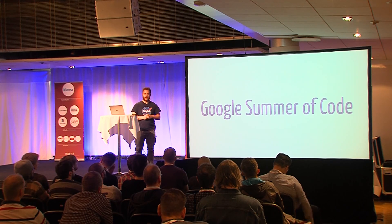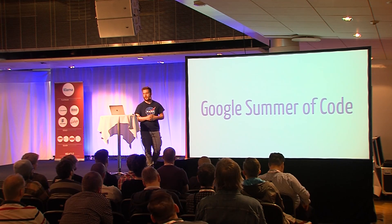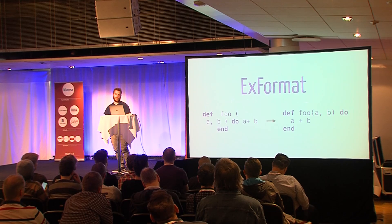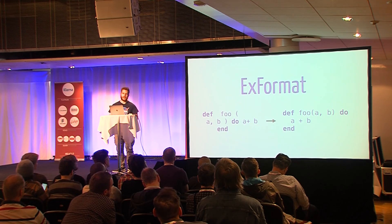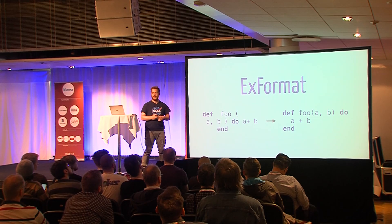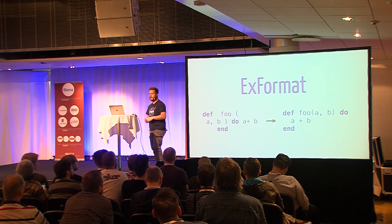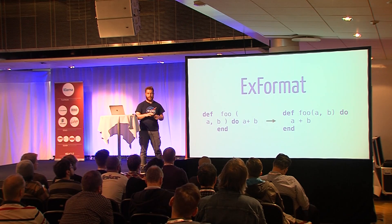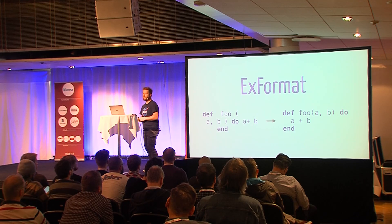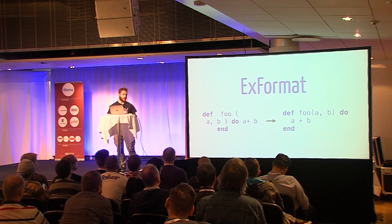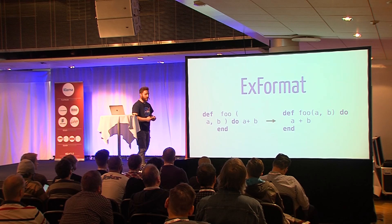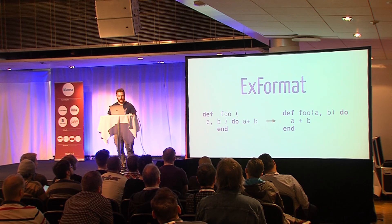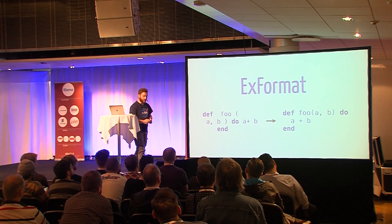We also got two Google Summer of Code projects accepted through the BEAM community. The first is ExFormat — a code formatter for Elixir. It will take a string of Elixir code and format it according to the Elixir style guide, producing formatted Elixir code. We hope this will make contributing to Elixir easier, make starting out with Elixir easier since you don't have to think about style, and it will definitely save time when reviewing code.